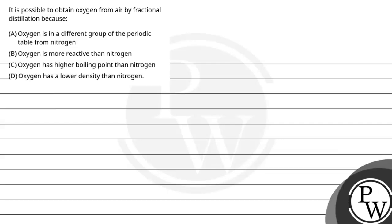Let's read the question. The question says it is possible to obtain oxygen from air by fractional distillation because: A. Oxygen is in a different group of the periodic table from nitrogen. B. Oxygen is more reactive than nitrogen. C. Oxygen has higher boiling point than nitrogen. And D. Oxygen has a lower density than nitrogen.